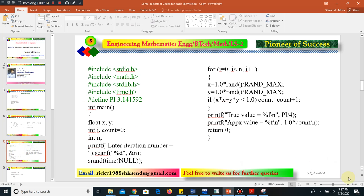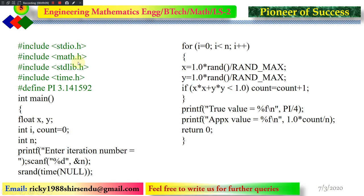Here is the code. I have used the required header files and globally defined the value of pi. Inside the main function, I have declared two floats x and y for the two random numbers. I will check whether x² + y² is less than 1 — if so, the point falls inside the circle. We declare integer i and count, initialized to zero. The count will increment each time a point falls inside the circle.